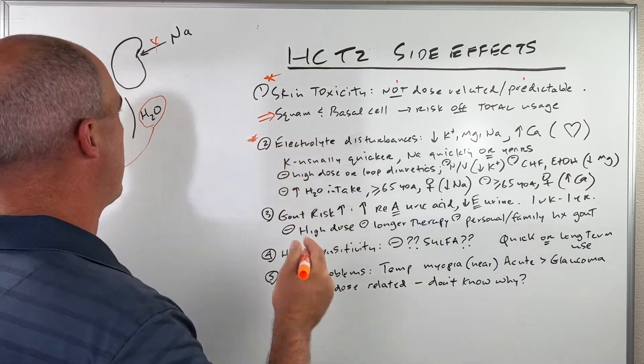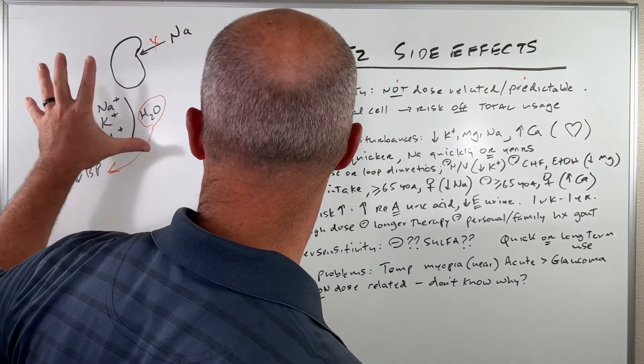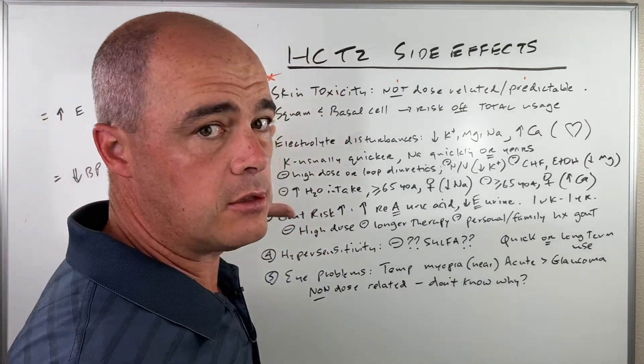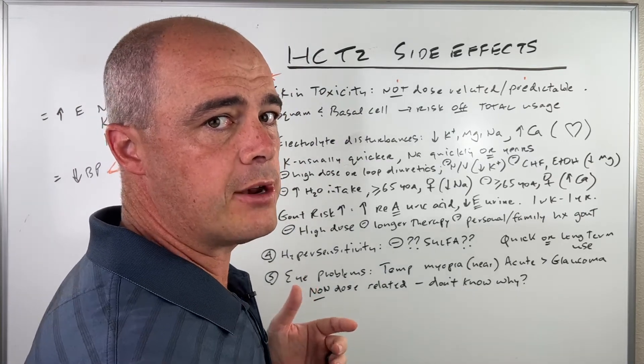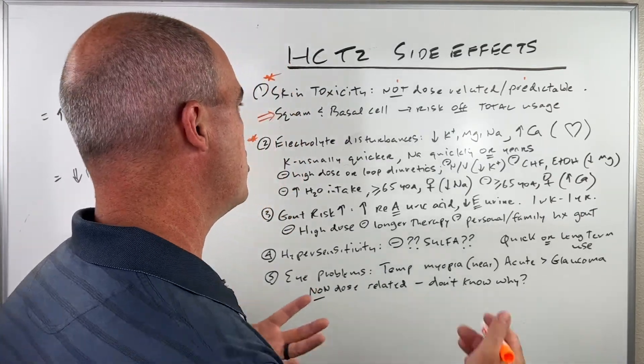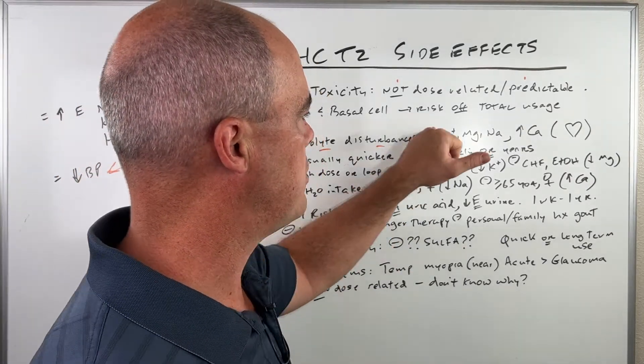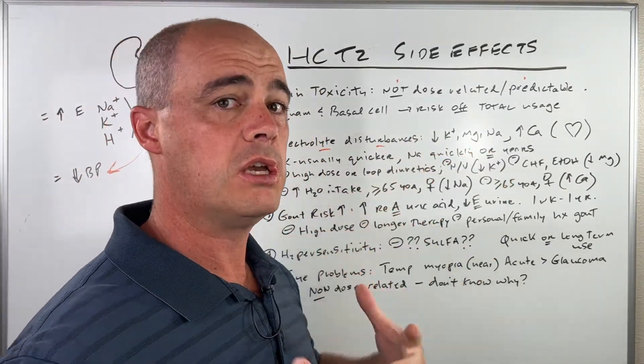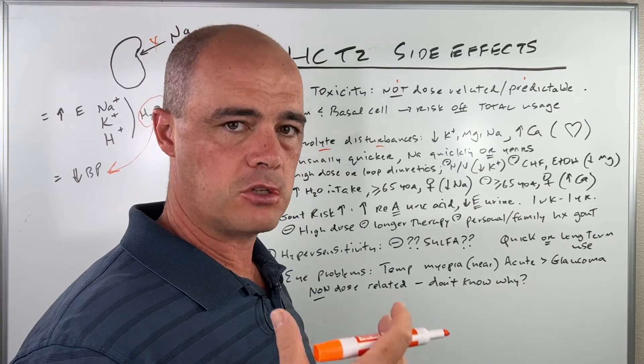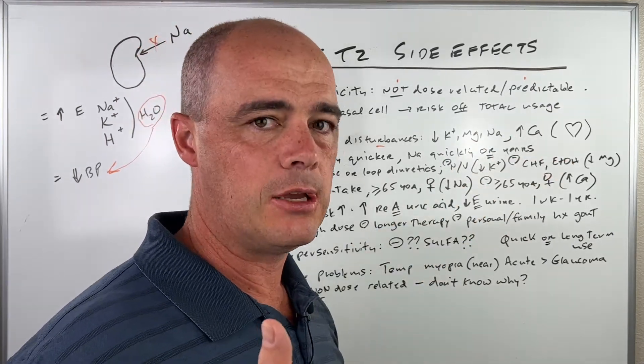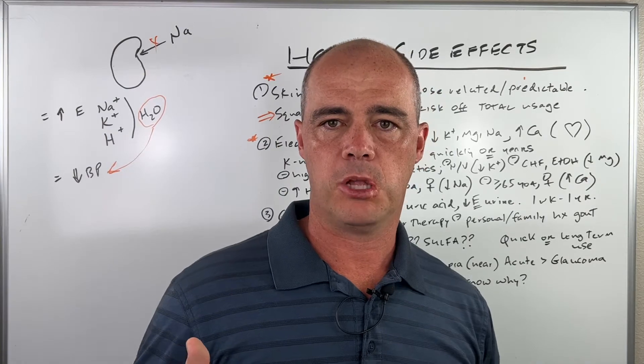Next thing we worry about, obviously we talked about what HCTZ does with your sodium, your potassium, your hydrogen. Those are your electrolytes. You can get electrolyte disturbances. We can see potassium go low. We can see magnesium go low. Obviously we see sodium go low. You can also see an increase in your calcium levels.